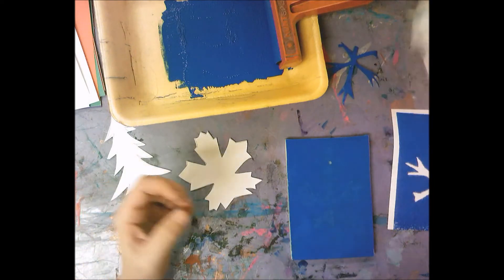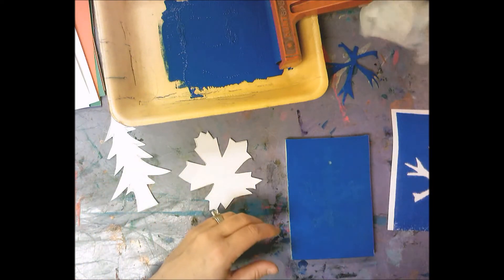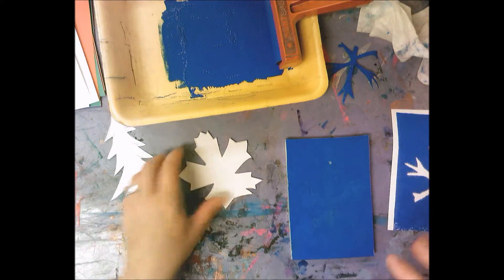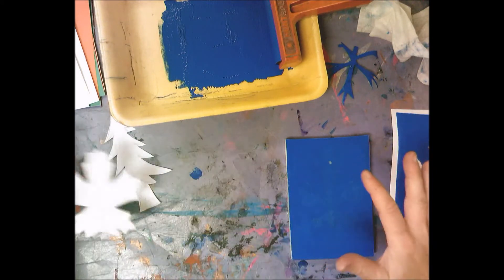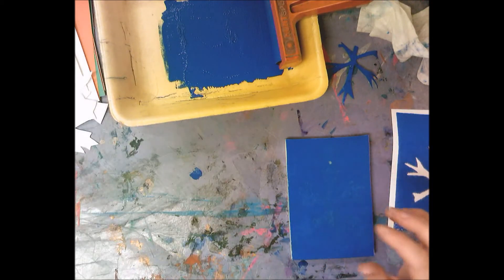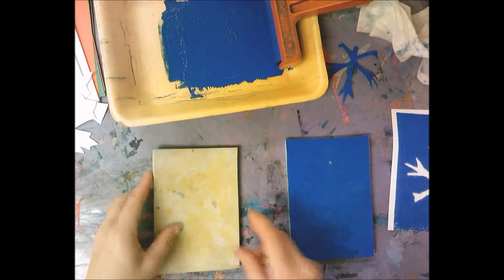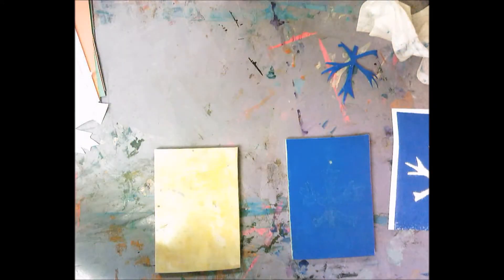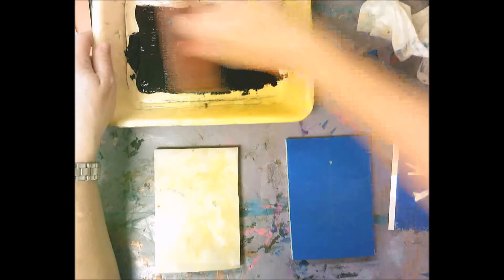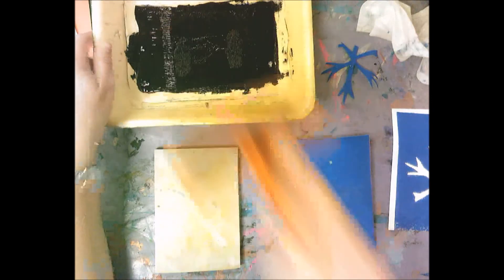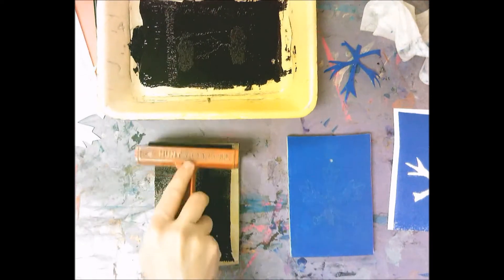I'm going to use a different color now, so I can't use this printing plate. This has got blue on it, so it's always going to have blue on it while we're doing this. I'm going to go to a different table with a different printing plate and roll ink out onto it. Remember it needs to be even.